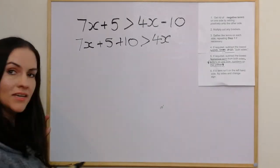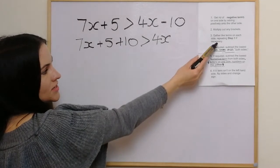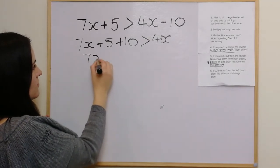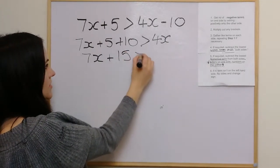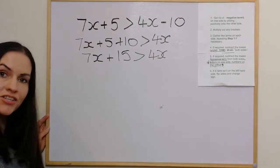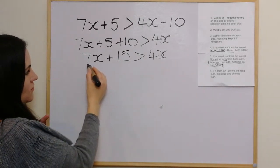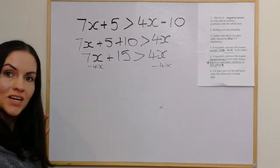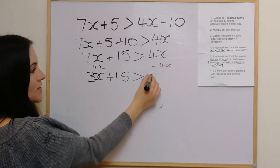We don't have any brackets so we skip step two. Gathering like terms on each side: we have the numerical terms 5 and 10, so we add these to get 15. So it's 7x plus 15 is greater than 4x. Step four says subtract the lowest letter term from both sides — the lowest letter term is 4x — so we take 4x away from both sides, giving us 3x plus 15 is greater than 0.